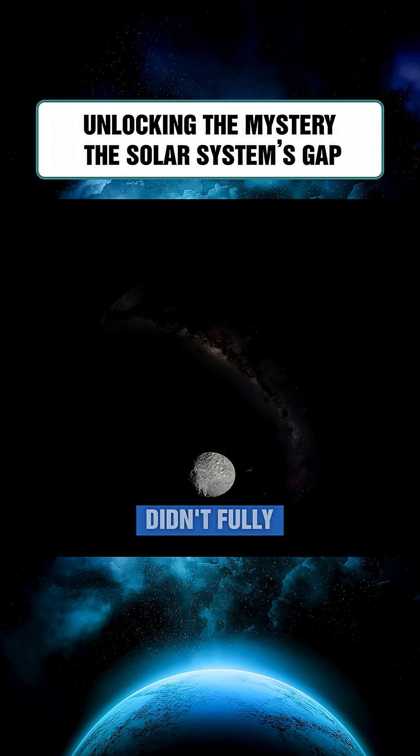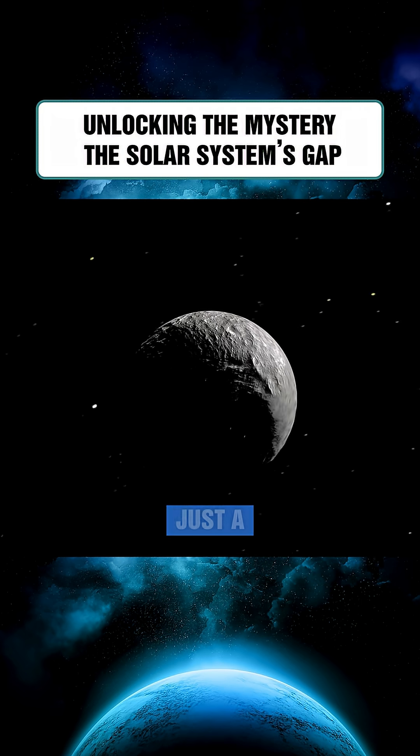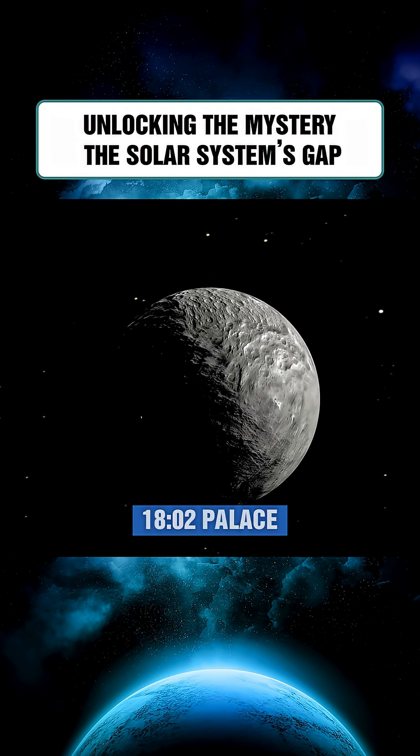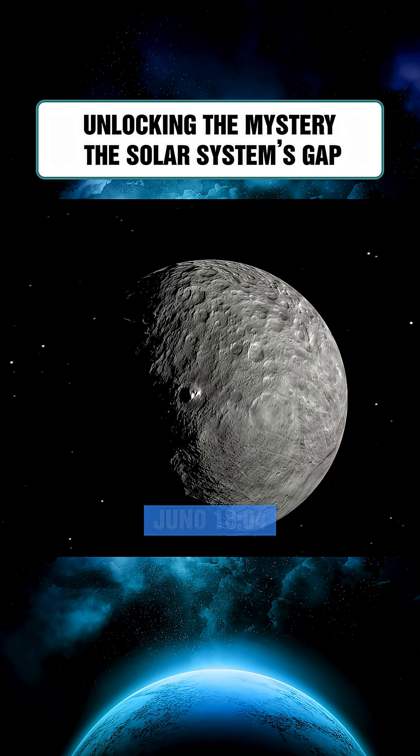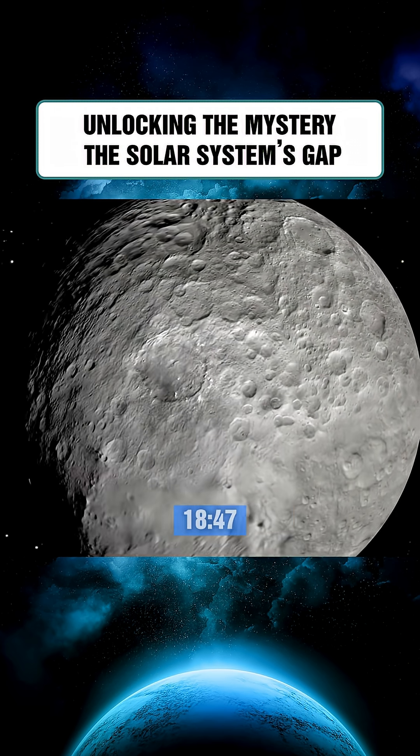But the discovery of Ceres didn't fully explain Bode's Law, because that gap didn't hold one big planet but an entire belt. Just a year later, 1802, Pallas was discovered, followed by Juno in 1804, Astraea in 1845, and Hebe in 1847.